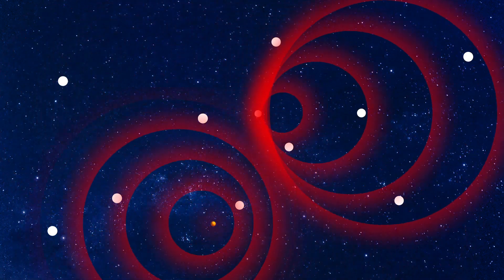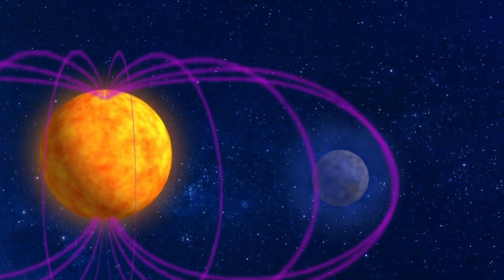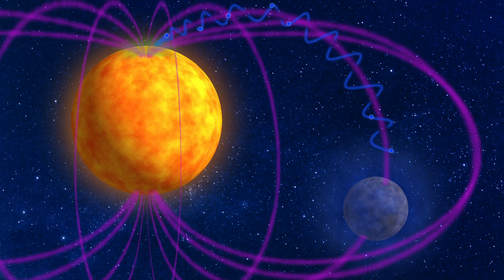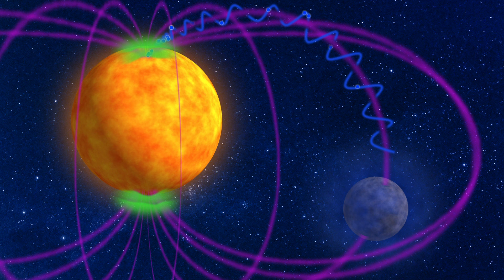And regarding those auroras? Electrons eventually fall down into the star and crash into its outer layers, causing the shimmering curtains of aurora. Only in this case, they shine over a star instead of a planet, and may even be visible to telescopes on Earth.